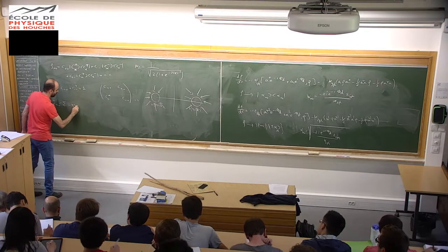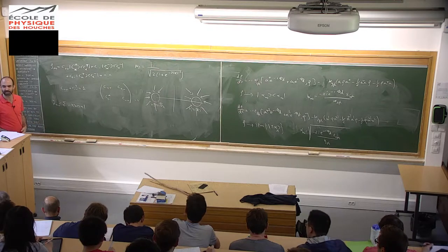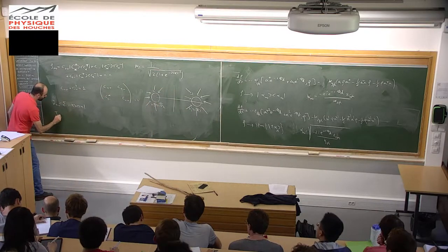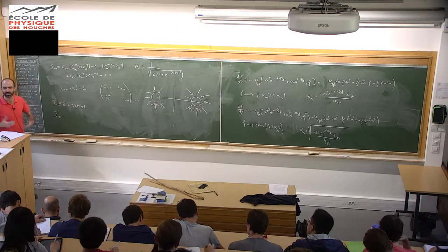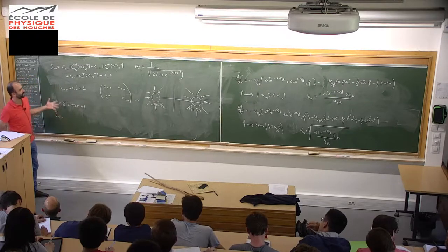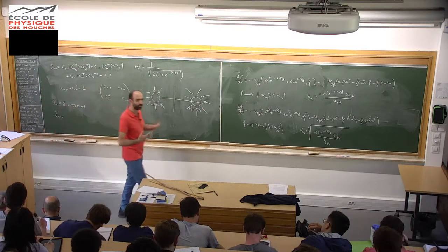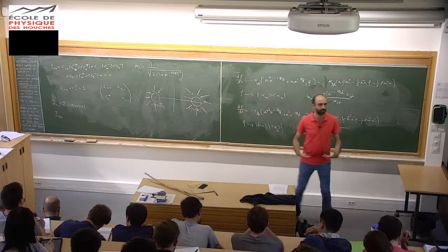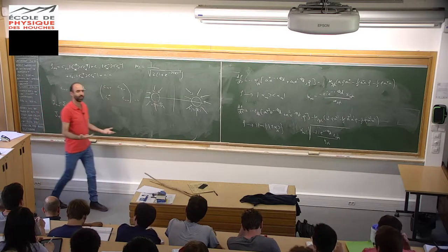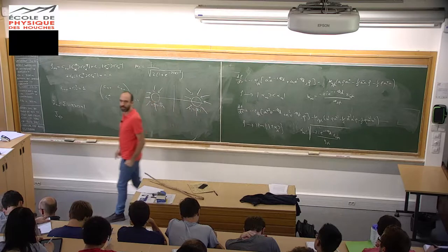We have three unknowns (c₊₊ and a complex number c₊₋; c₋₋ is given by 1 minus c₊₊), and three conserved quantities. With that we can find these three numbers and identify the steady state. You can apply this method and ask yourself: where do I end up if I start from a coherent state which is not far from alpha? Let's say I consider an initial state rho₀ which is the projector onto |α + ε⟩ for some complex number ε of order one at most.